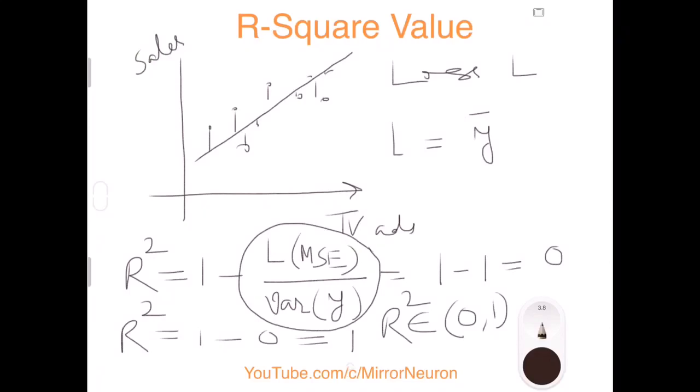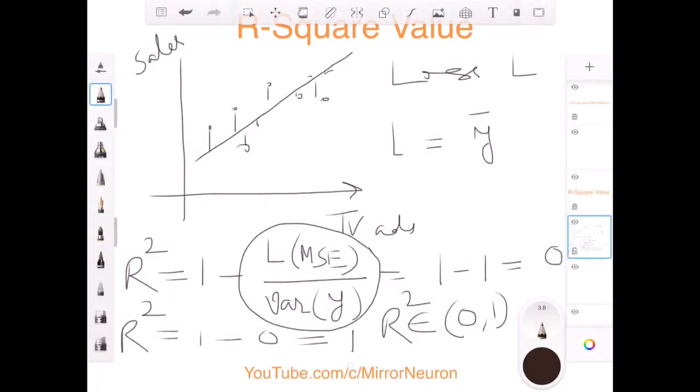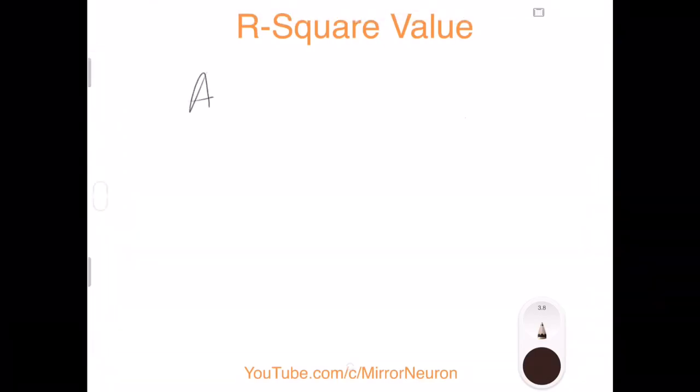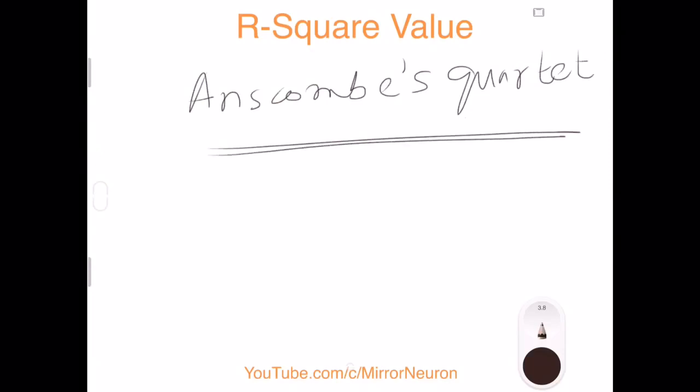To this context, we would like to also introduce you something called Anscombe's quartet, and I would encourage you to read more about it. Anscombe's quartet shows that first degree and second degree statistics are not enough to analyze your data, and you have to even plot it to make sure that your data is properly fit.